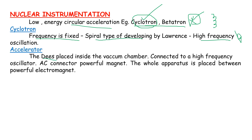In the cyclotron, the Ds — D1 and D2 — are placed inside the vacuum chamber. These are connected to a high frequency oscillator via an AC connector. The apparatus also includes a powerful magnet.